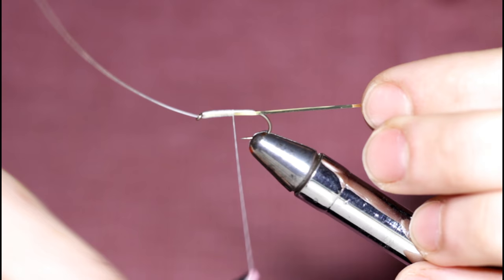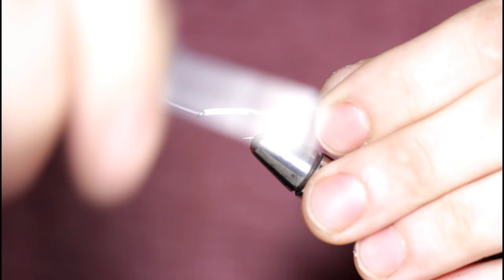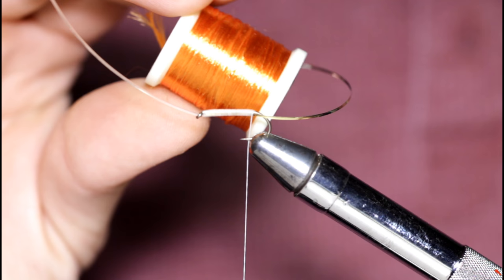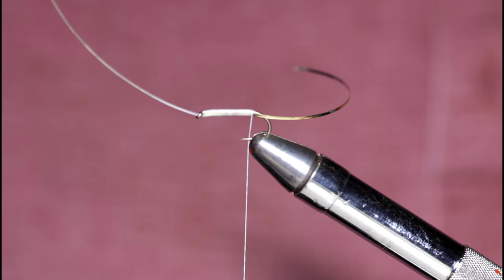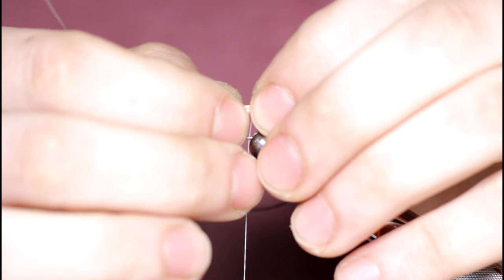So just taking some touching turns back down to the barb and I'm going to grab some orange floss here. I've got some Danville's four strand. I'm just going to tie in the tag end slightly longer than the body and tie this up towards the hook eye.